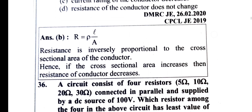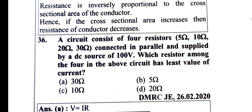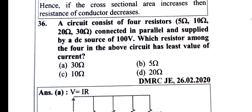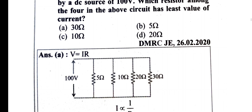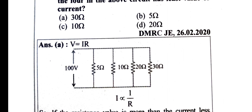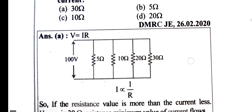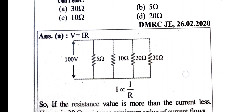The circuit consists of 4 resistors: 5 ohm, 10 ohm, 20 ohm, 30 ohm, connected across 100 V. Which of the 4 resistors has the least value of current? V equals IR, so I is proportional to 1 over R — the resistance value is more, the current is less. The minimum value of current is through the 30 ohm resistance.